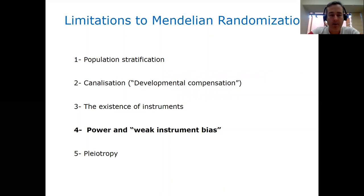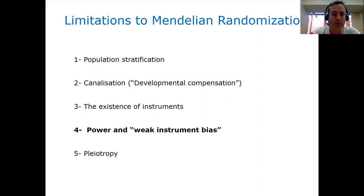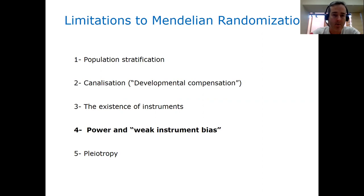I'm going to talk about five of these, in particular the last two on this slide, but I just want to mention three other limitations. We've talked a little bit about population stratification. If it's present, it has the potential to reintroduce confounding into an MR analysis. So it's very important that your MR analysis is performed on ancestrally similar individuals, and you can correct for population stratification using, for example, ancestry informative principal components, if possible.